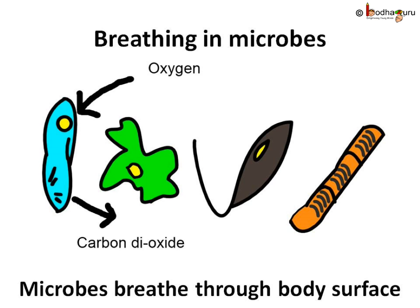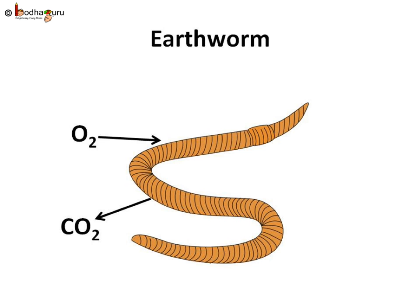Microbes don't have any organ or blood, so they just absorb oxygen directly through their body surface into the cell. The earthworm also absorbs air through the body surface, but a little differently. The earthworm has blood, so the air enters the blood vessels which are just under the skin. Then the blood carries oxygen to all the cells.